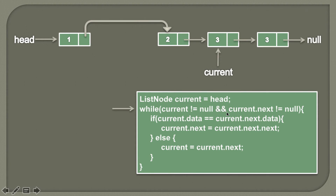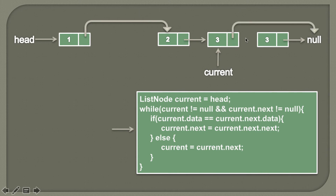The while loop condition is evaluated again. Current is not null and current.next is also not null, so the while loop is true. We check whether current data equals current.next data — current data is 3 and current.next data is also 3, so they are equal. We have encountered a duplicate and must remove the node with value 3. We break the pointer and assign current.next.next — which is null — to current.next. As this node has no reference, it will be garbage collected.